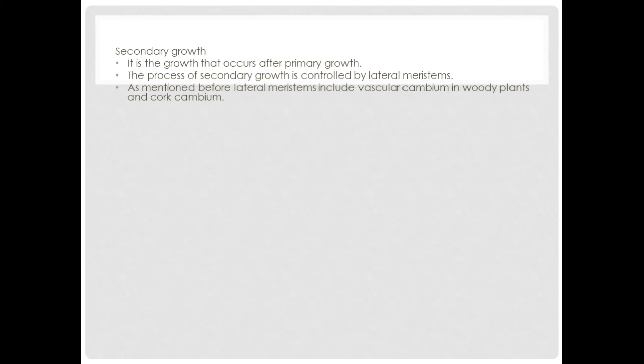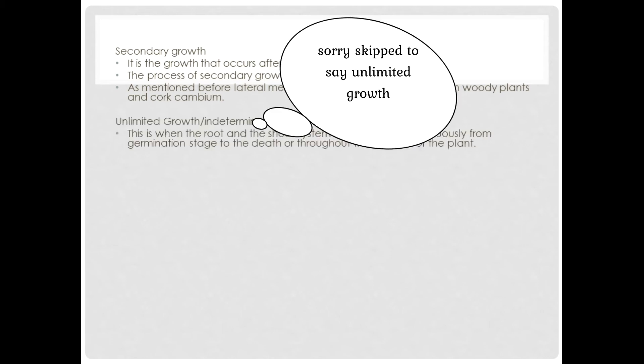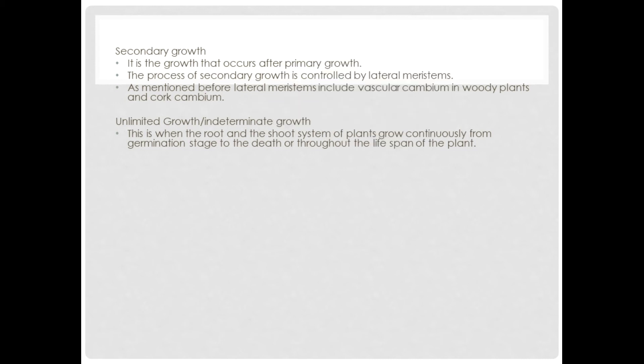Now let's take a look at secondary growth. It is the growth that occurs after primary growth. The process of secondary growth is controlled by lateral meristems. As mentioned before, lateral meristems include vascular cambium in woody plants and cork cambium. This is when the root and the shoot system of plants grow continuously from germination stage to the death or throughout the lifespan of the plant.